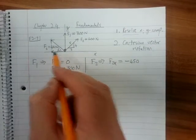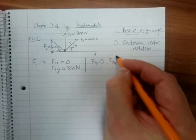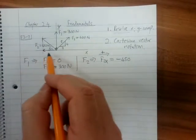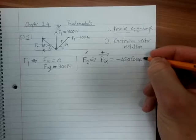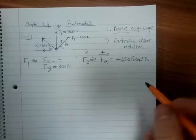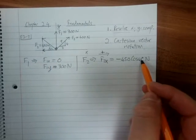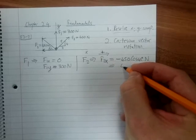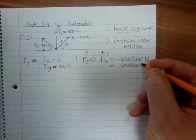If we break this up, we will see that is my X component and it is in the opposite direction to what we've selected as positive. We select to the right as positive, so it'll be minus 450 cos 45 degrees. So F2 in the X will be minus 450 cos 45 Newton. Another way of writing it would be 450 cos 45 Newton.